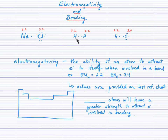Here I have two hydrogen atoms with their one valence electron each, and here I have a hydrogen atom and a neighboring oxygen atom with six valence electrons — one, two, three, four, five, six.